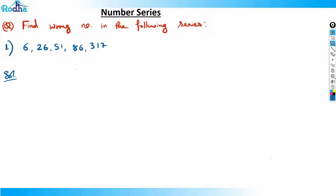If you try to find the difference here, this is a special series of the form a² - b². For example, we can have: 3² - 2² = 5, plus 1 = 6. Then 4² - 3² = 7, plus 2 = 9. Then 6² - 5² = 11, plus something. This kind of series continues in a pattern.